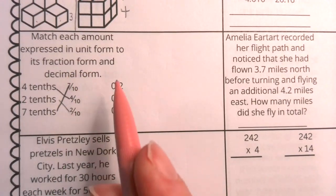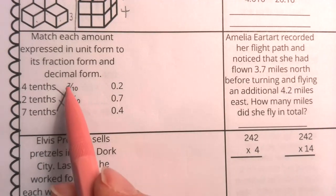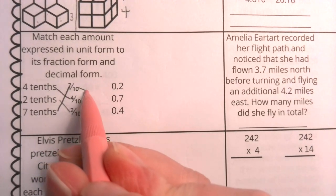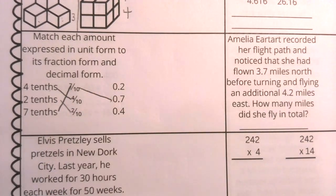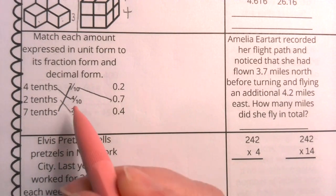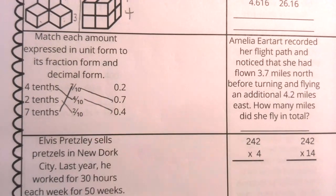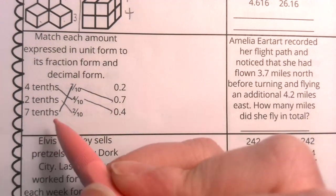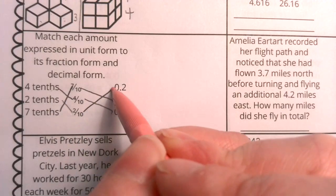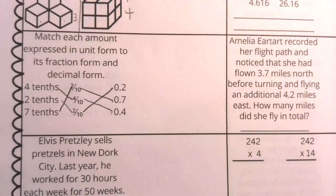And now, I'm going to connect my fraction form to my decimal form. Seven tenths on top is the same thing as this seven tenths in the middle. Four tenths in the middle is the same as four tenths on the bottom. And we have two tenths, which is the same as two tenths. That is what we have to do for that particular problem.